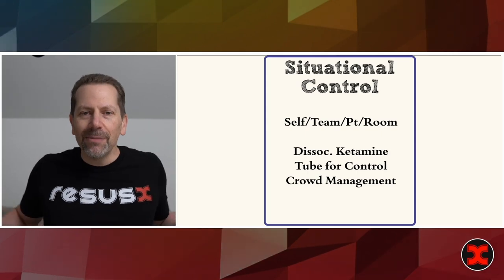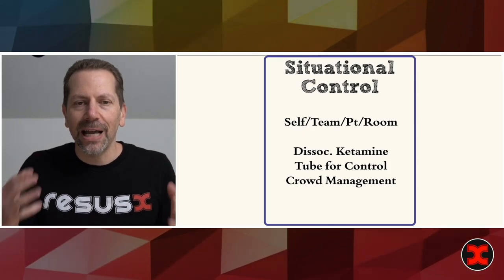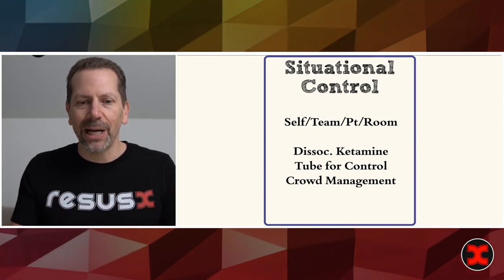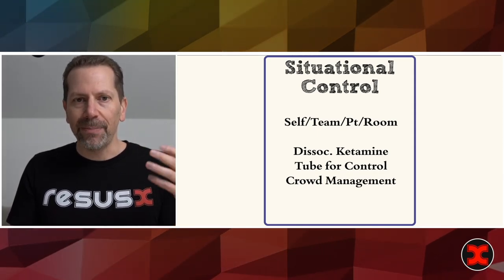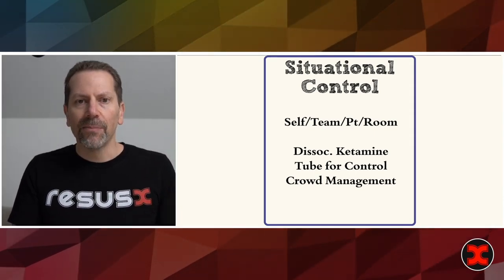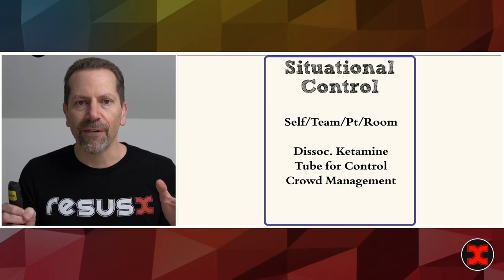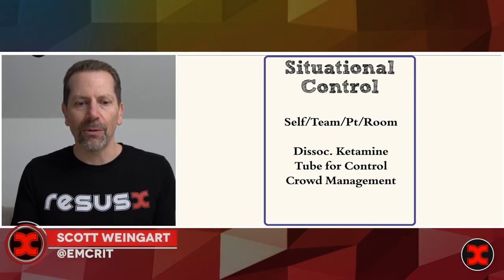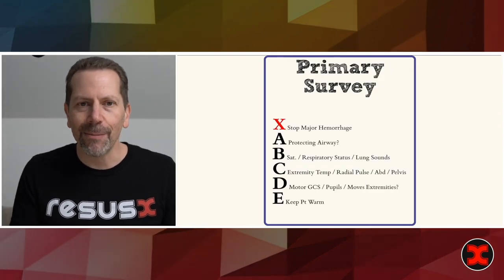Situational control: the trauma team leader is always maintaining the room in a state of quiet potential. You cannot have a loud room — whether from the patient or the team. So they keep themselves quiet, keep the team quiet, keep the patient quiet. Sometimes you use dissociative ketamine to keep agitated patients with head injury or intoxication under control. Sometimes you actually intubate — especially if the patient is wailing in pain from a dislocation or open fracture, and they're going to the OR anyway. Then there's crowd management: kicking out all extraneous people from the room.